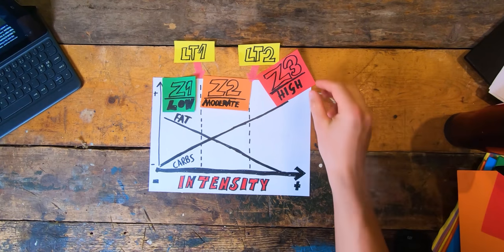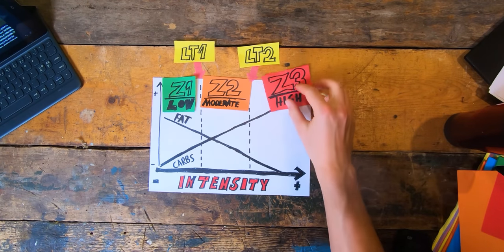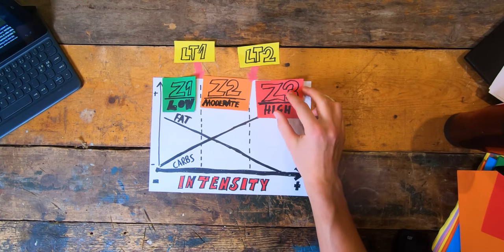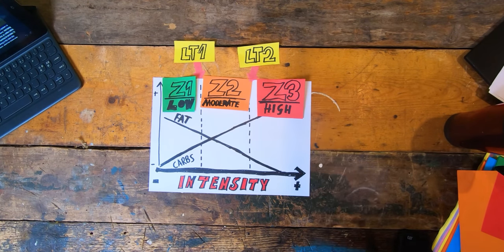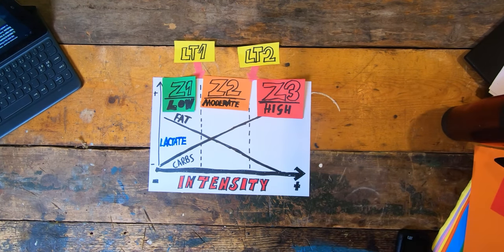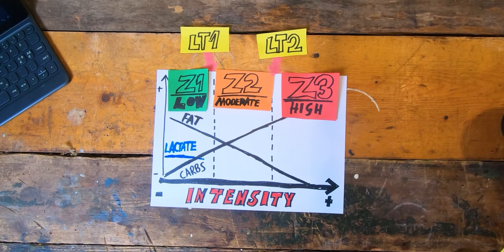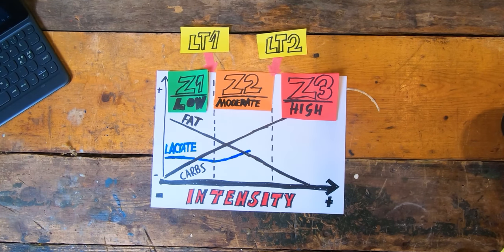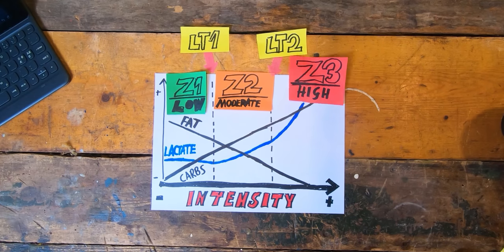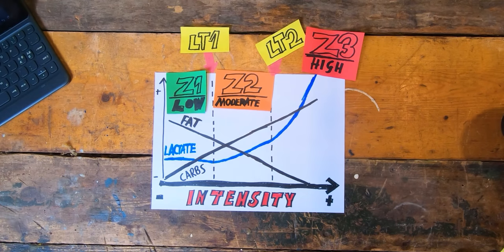As the intensity increases, your body produces more and more lactate. If the lactate concentration gets too high, your body is unable to clear it out from your muscles and you get fatigued. You can also think of lactate as stress on your body — the more lactate, the more stress.